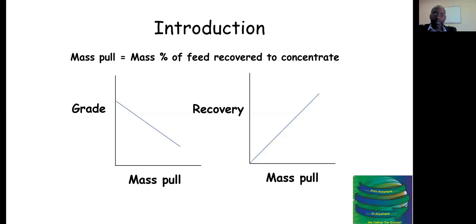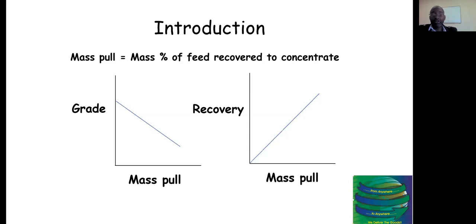If you plot on a graph the grade versus the mass pull of material being recovered to your concentrate, you find that the grade decreases as you increase your mass pull. Increasing the concentration means more particles are being recovered from the feed to your concentrate, which decreases the grade. Looking at the recovery versus mass pull graph, you find that recovery increases as more particles report to the concentrate — though this decreases the grade.